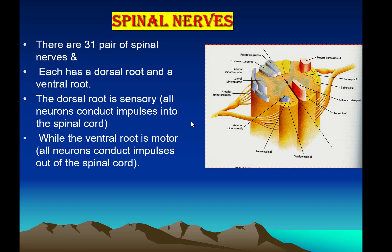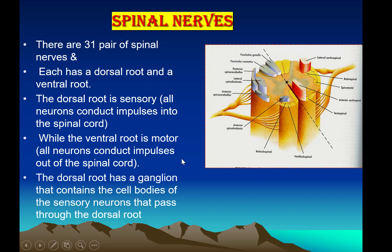The ventral root carries information away from the spinal cord and is motor in nature. The dorsal root has a ganglion that contains the cell bodies of the sensory neurons that pass through the dorsal root.